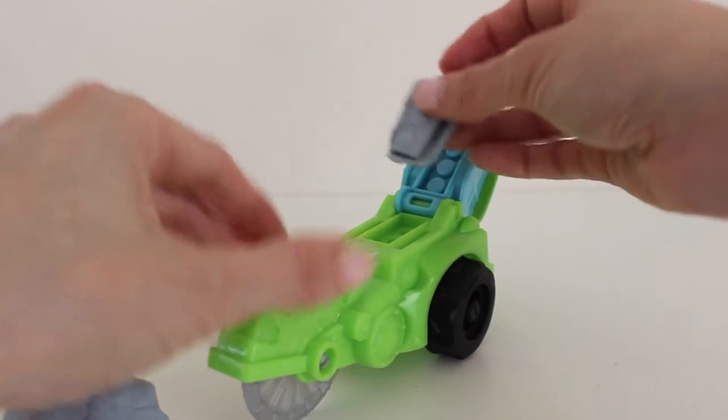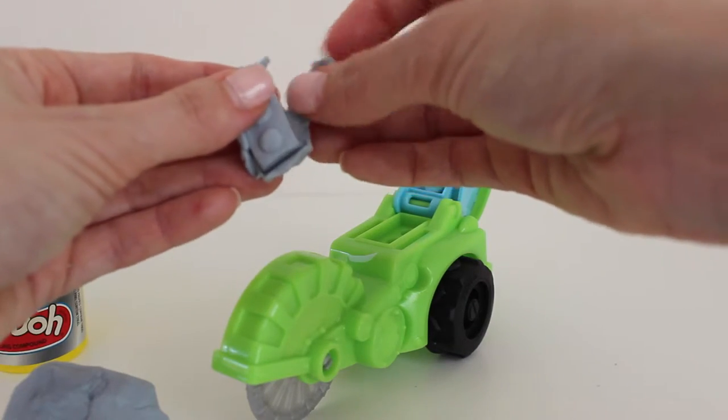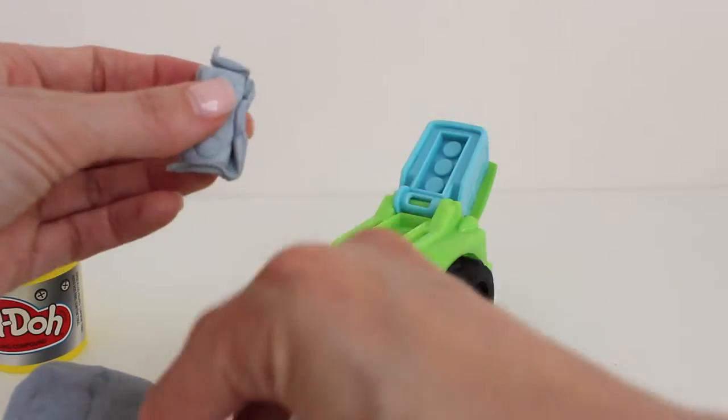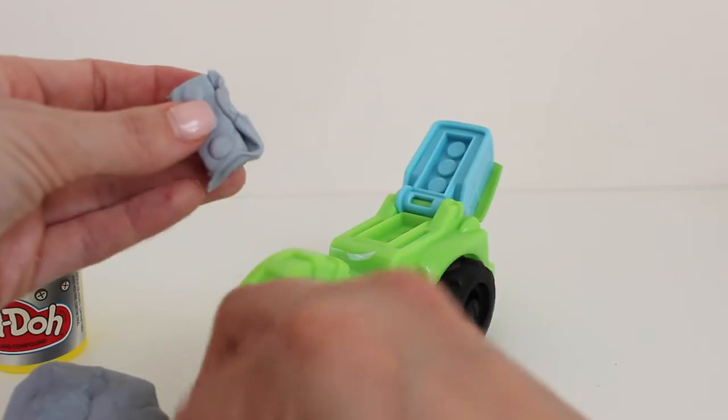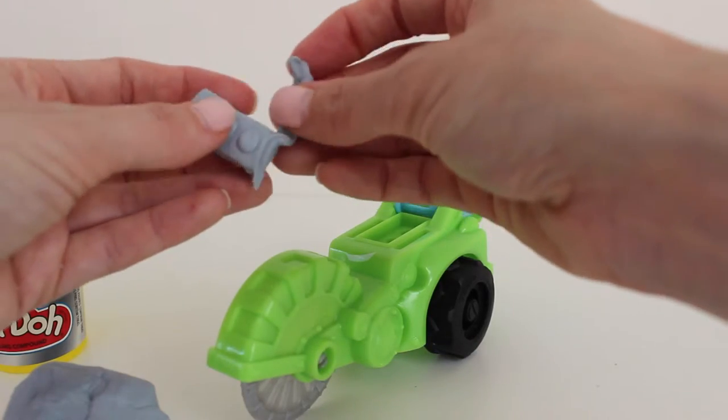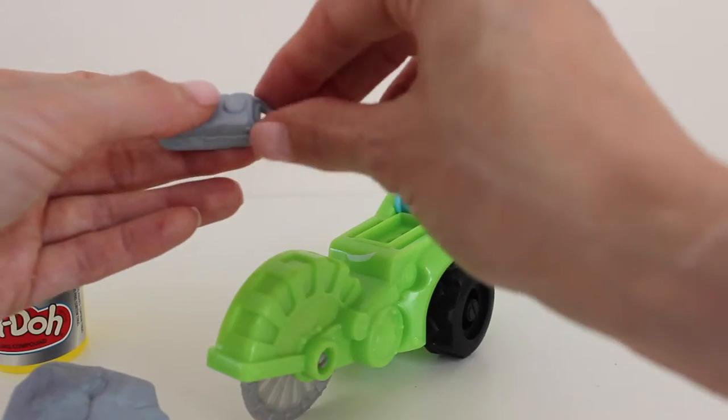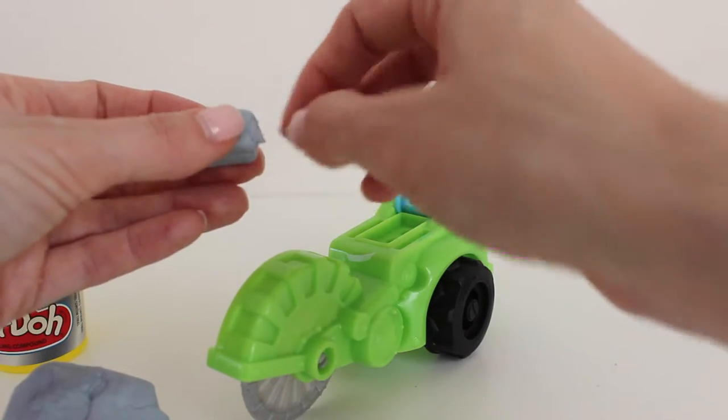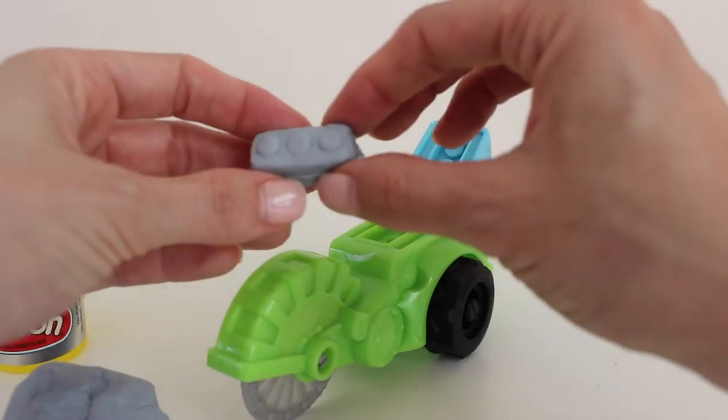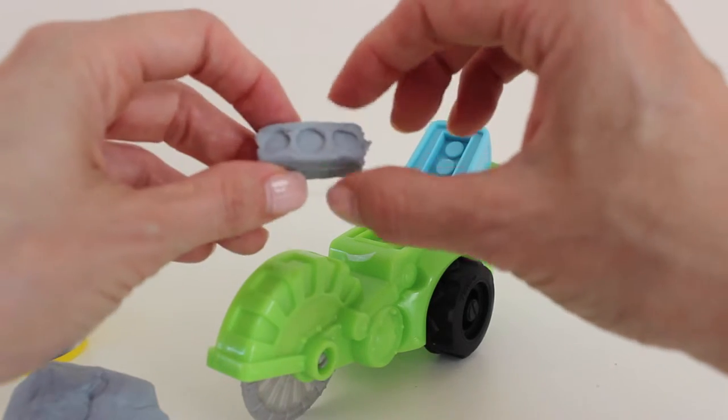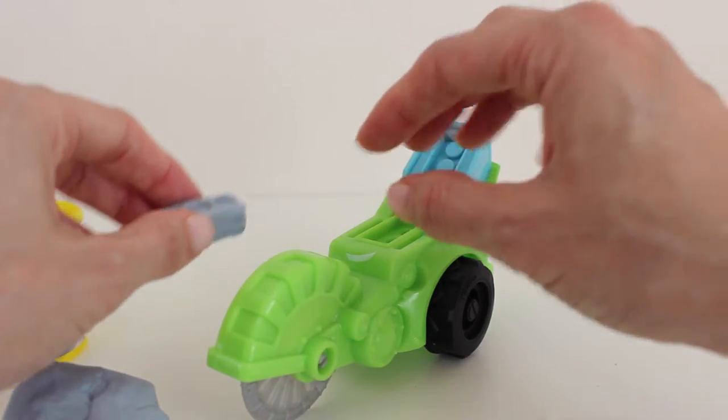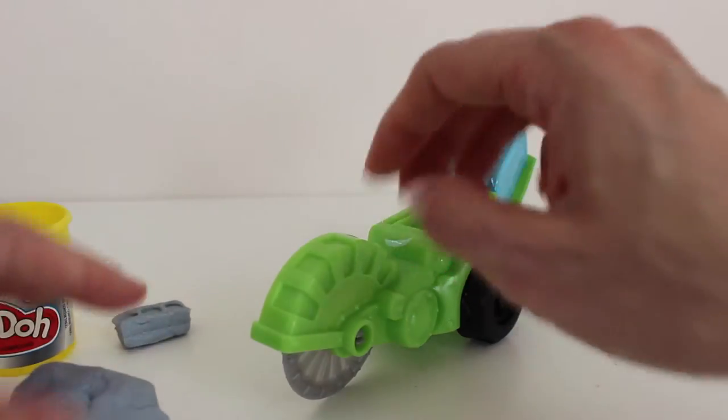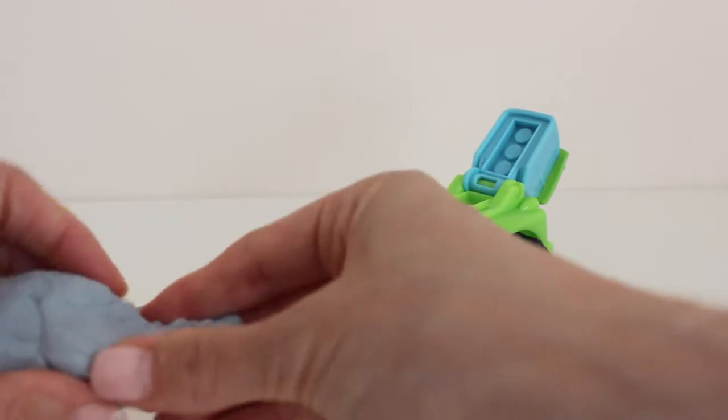Carefully take it out and then take off the little side pieces. We have a perfectly shaped cement block. We can make a few of them and start building up a wall. So let's make a couple more together.